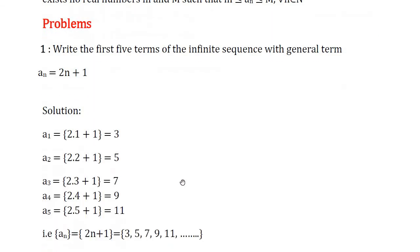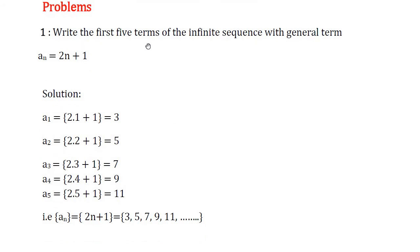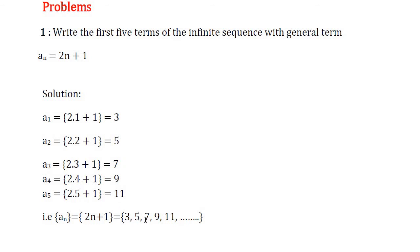Now we solve some problems related to sequences. Problem: Write the first 5 terms of the infinite sequence with general term aₙ = 2n + 1. We put n = 1, 2, 3, 4, and 5 to get the first 5 terms. Putting n = 1: a₁ = 2(1) + 1 = 3. The terms a₂, a₃, a₄, a₅ follow similarly. So the sequence is 3, 5, 7, 9, 11, and so on.